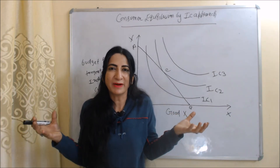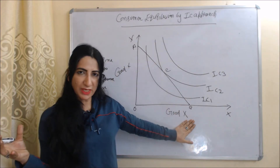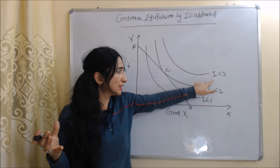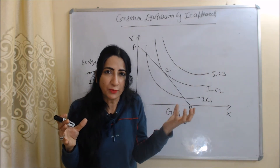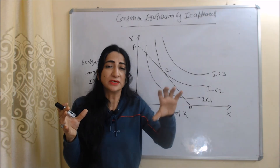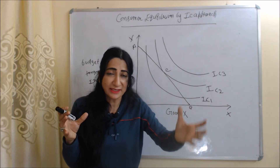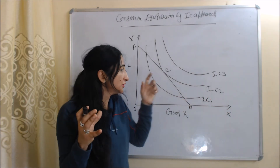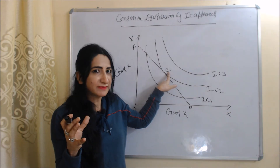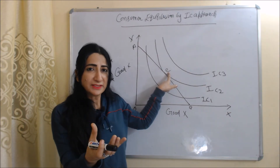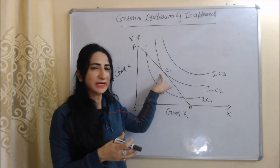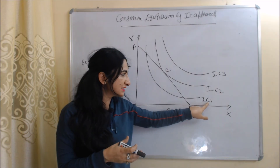Now we will discuss consumer equilibrium by the indifference curve approach. In this diagram, on the X-axis we have good X and on the Y-axis we have good Y. Line AB represents the budget line, and IC1, IC2, and IC3 are indifference curves. According to this approach, the point at which the budget line is tangent to an indifference curve is called the consumer equilibrium point. At point E, the budget line is tangent to the indifference curve, so E is the consumer equilibrium point where satisfaction and budget are matched.